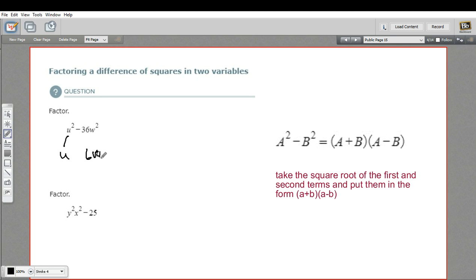So we have our two chunks. That's our a and our b, u and 6w. And we just put them together in this form. So u plus 6w times u minus 6w.